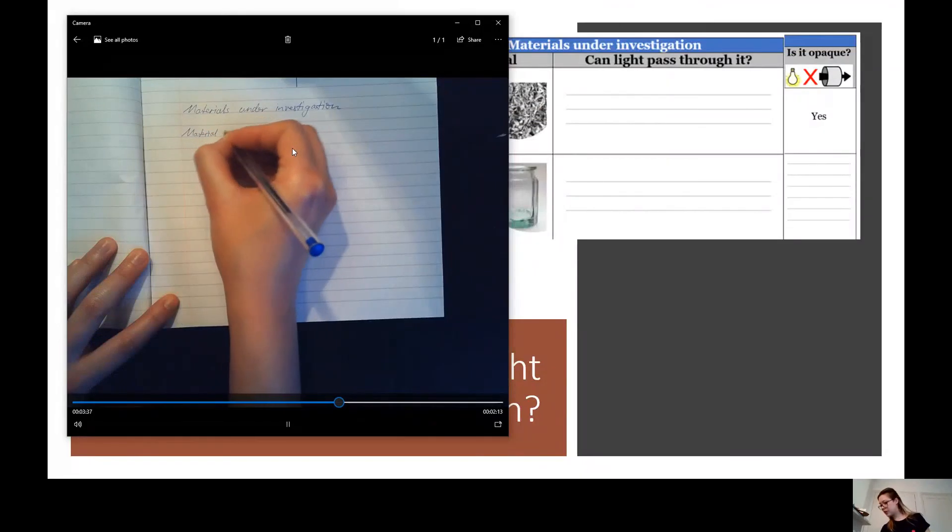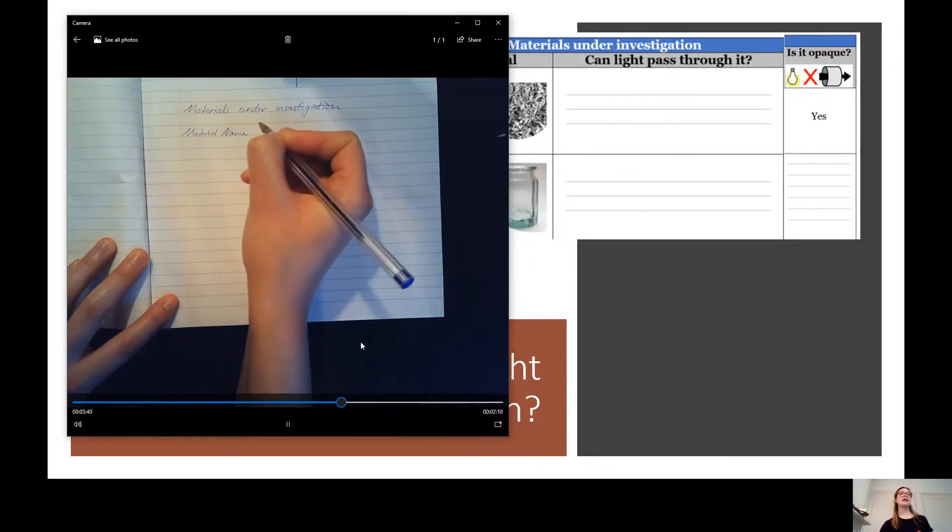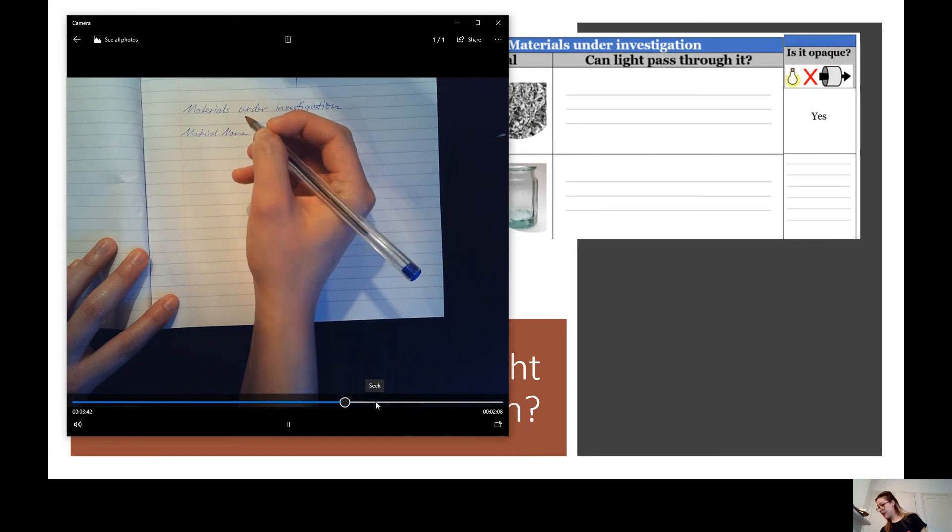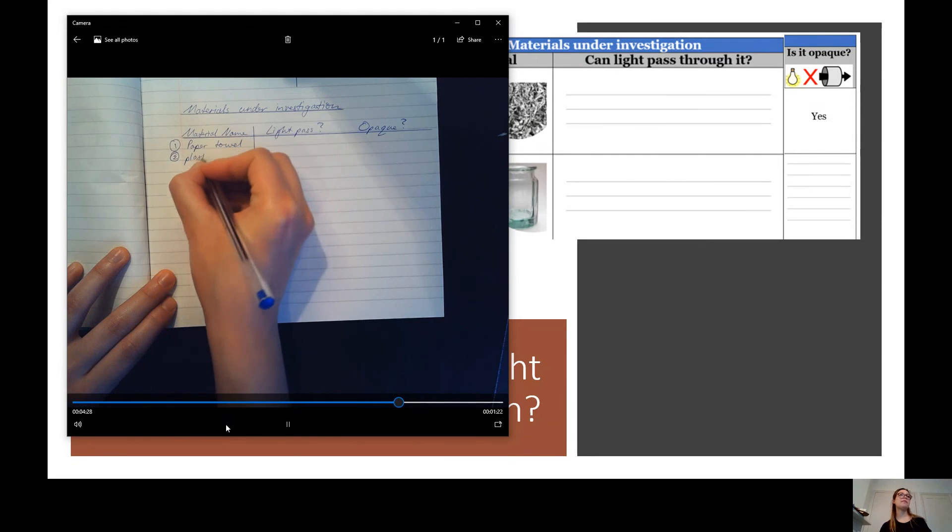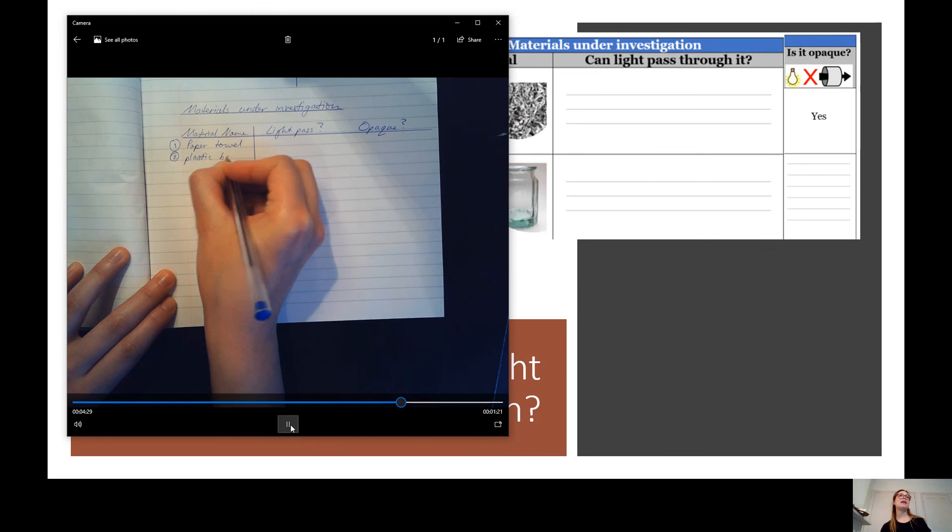Right. Let me show you how to set this out in your books. So what I would like you to do here is write. Oh, I need to share my screen. There we go. Write the title, which is materials under investigation. And then you need three columns. Your three columns should be material name. Can light pass through it? And is it opaque?